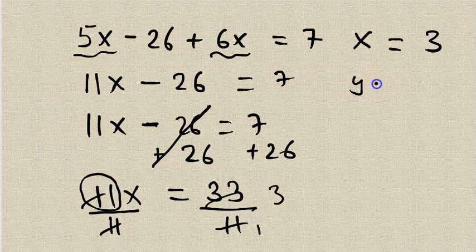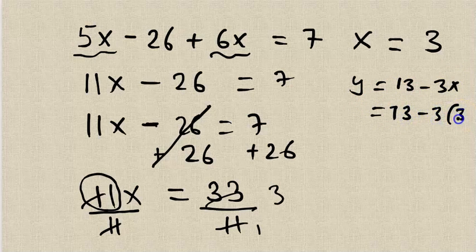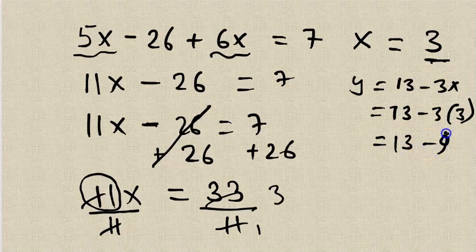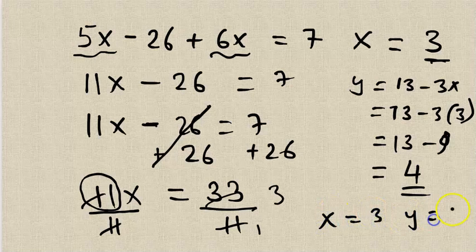Remember we said y equals 13 minus 3x. So to solve that, 13 minus 3 times what was the value of x? x is 3. We just found it here. So this is equal to 13 minus 9. 3 times 3 is 9. So 13 minus 9 is what? That is 4. So the value of y is 4. So in these two simultaneous equations, x is 3, y is 4.